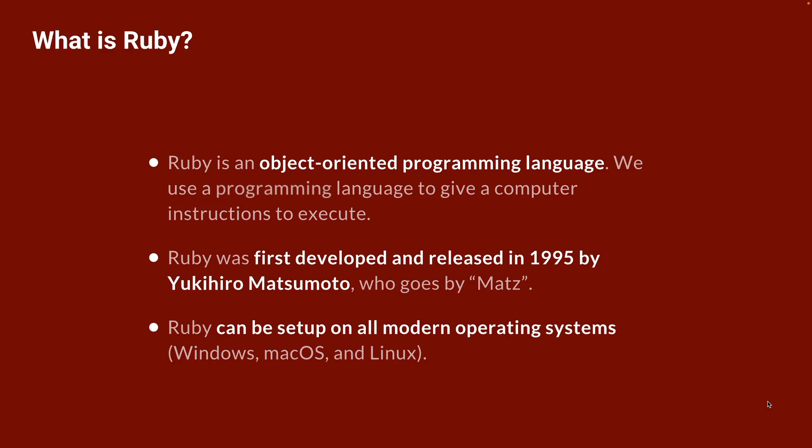Ruby was first developed and released in 1995 by Yukihiro Matsumoto, who goes by the nickname Matz in the community. The language is almost 30 years old, and today it can be set up on all modern operating systems, including Windows, macOS, and Linux. While these systems may implement Ruby differently under the hood, the actual core mechanics of the language — the syntax we write, meaning the symbols and characters — remains the same regardless of what operating system you're working on.